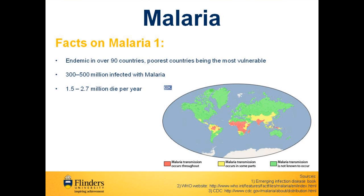Malaria is endemic in over 90 countries with around half the world's population at risk of infection, and those living in the poorest countries are the most vulnerable to malaria infection. Currently 300 to 500 million individuals are infected with malaria worldwide and 1.5 to 1.7 million of these people die each year, with around 90% of deaths occurring in Africa.